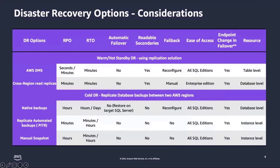For DR solutions, RPO and RTO are the primary requirements. This lets you decide which DR solution to choose. Business-critical workloads that require low RPO and RTOs in minutes tend to use architectures often referred to as a hot standby or warm standby site. This requires you to implement a replication solution. The first two options — AWS DMS and cross-region read replica — are examples of replication solutions to achieve in-minute RTOs. DMS does logical replication at the table level using CDC, change data capture. Cross-region read replica uses Microsoft's high availability solution, Always On Availability Groups, to create a read replica in a different region using asynchronous replication.